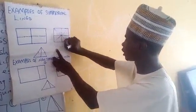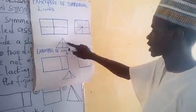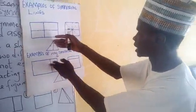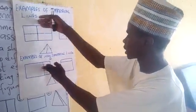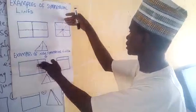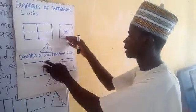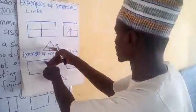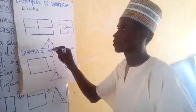The other shape is an isosceles triangle, which has been divided into two equal parts. All these lines are lines of symmetry. The four lines drawn on the rectangle and square are lines of symmetry, and the one line drawn inside the isosceles triangle is also a line of symmetry.